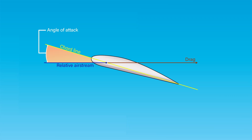On each part of an airfoil or wing surface, a small force is present, of a different magnitude and direction from forces acting on other areas. It is possible to add all of these small forces mathematically; that sum is called the resultant force. This resultant force has magnitude, direction, and location, and can be represented as a vector. The point of intersection of the resultant force line with the chord line of the airfoil is called the center of pressure.